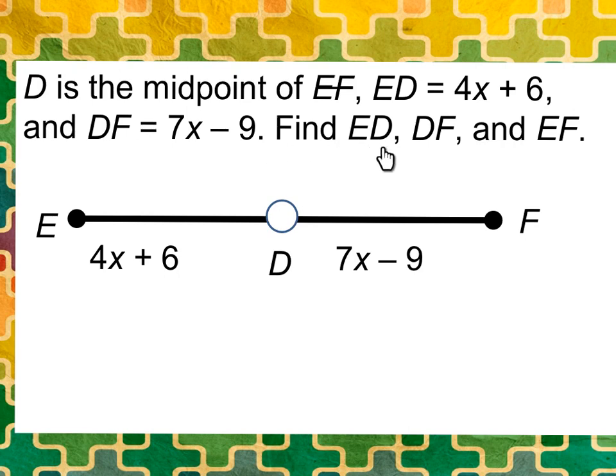And so we need to find out all the segment lengths. We need to find out what ED is, what DF is, and then what is the total length of EF. So the first thing we're going to need to do is set up an equation to help us solve for X to find these segment lengths. So since these are the midpoint, that means that this segment ED is equal to this segment here, DF.